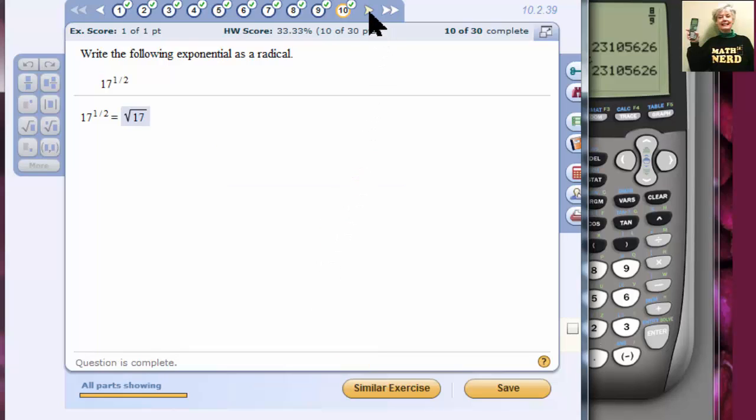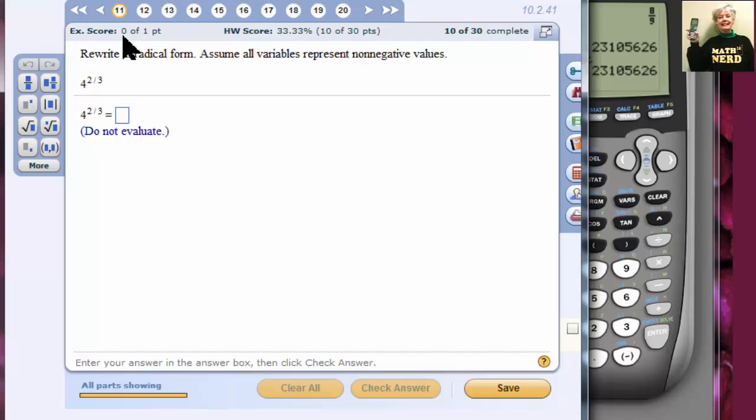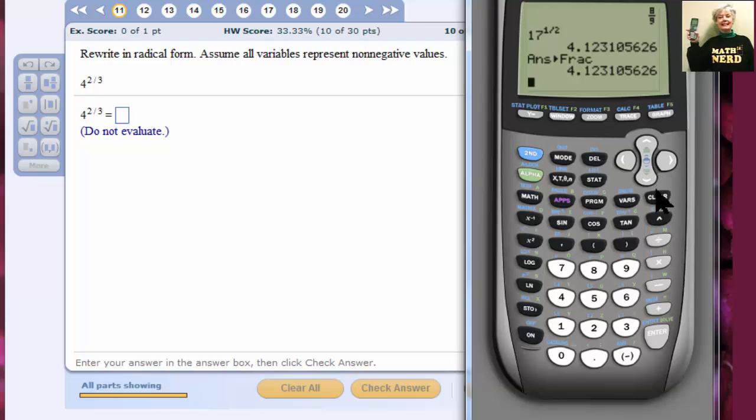Alright, let's go to 11. 4 to the 2/3 power. I'll have 4 carat 2 divided by 3. Enter. No! It's irrational. Rewrite in radical form. I have got to learn to read the instructions.